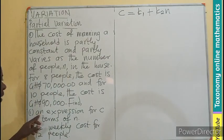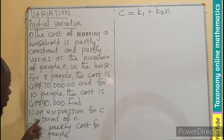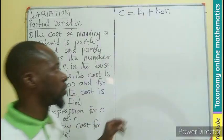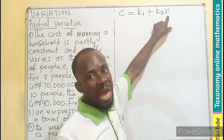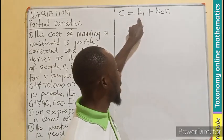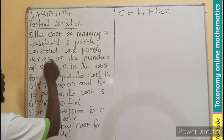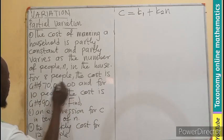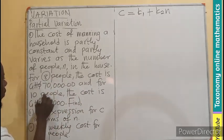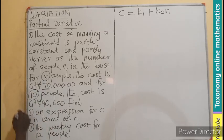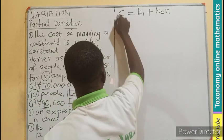So the first question: write an expression for C in terms of n. Before we can find the cost, we need to know what k1 and k2 are. That's why these values are given to us: 8 people, 70,000; 10 people, 90,000. So we're going to write when...